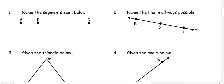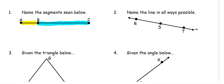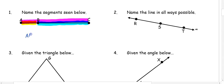In number one, name the segments below. We have three segments here. The yellow segment we can name AB. The blue segment we can call BC or CB — we can switch either way. And the pink segment we can call AC or CA — you can switch either way.